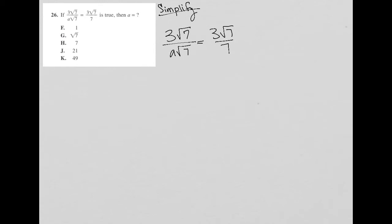Well, I can simplify that because square root of seven divided by square root seven, that's gone. So this becomes three over a equals three root seven over seven. And then I can cross multiply here. So I'd have three a root seven equals three times seven, which is 21.